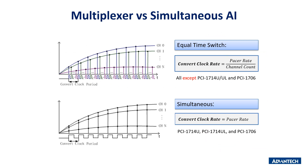There is another difference between cards using a single ADC and those using multiple ADCs. For cards with a single ADC, the multiplexer switches channels and each channel has a small time delay, as shown in the top picture. For cards with multiple ADCs — also called simultaneous AI cards — different channels can be measured at the same time without any time delay, as shown in the lower picture.